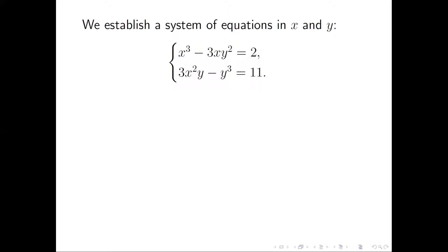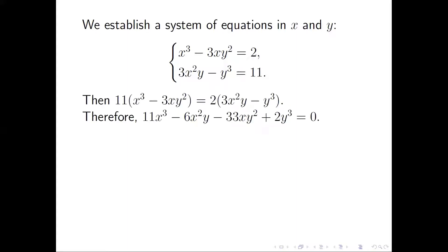Then we compare the real parts and the imaginary parts for the right and left-hand sides, and establish a system of equations in x and y. Look at the equations — the left-hand side is a homogeneous polynomial and the right-hand side is a constant. To solve this type of equation, we simply do a cross multiplication: the left-hand side of the first equation times the right-hand side of the second equation equals the other way around.